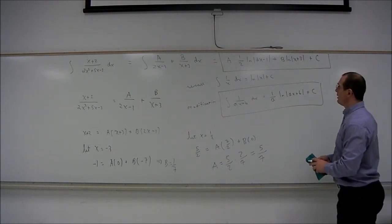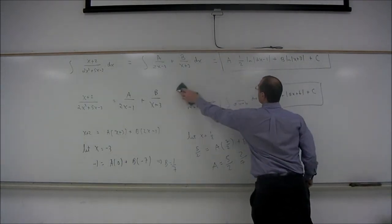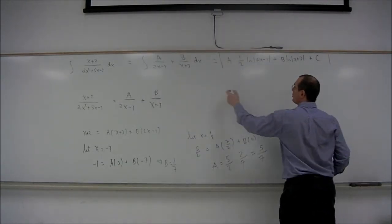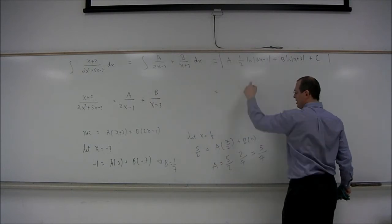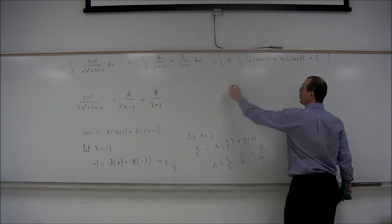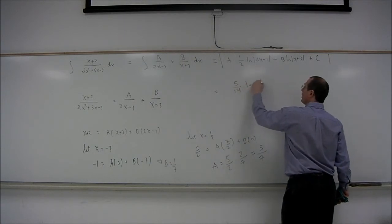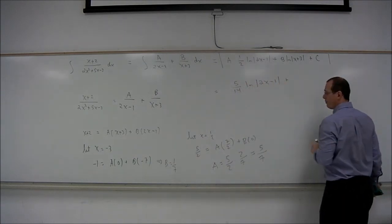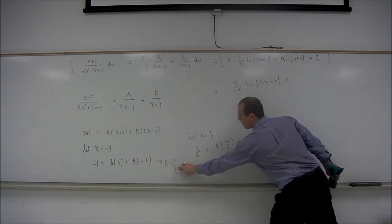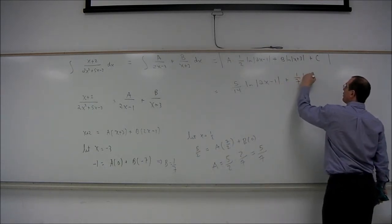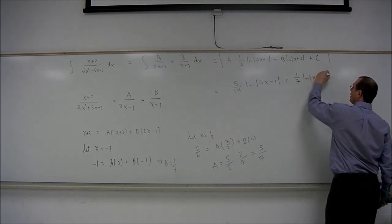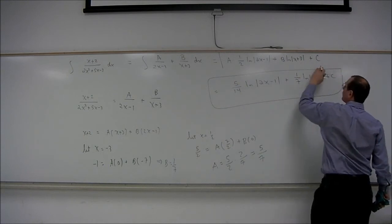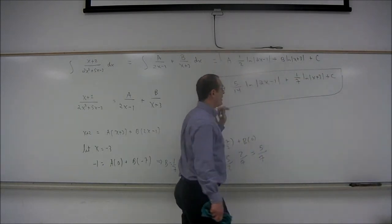So our final answer, then, our final answer is the integral is equal to a times 1 half is going to be 5 over 14 times the natural log of the absolute value of 2x minus 1 plus b is 1 seventh times the natural log of the absolute value of x plus 3 plus c.